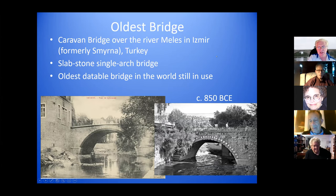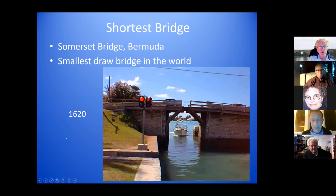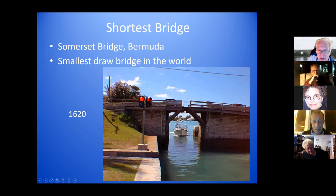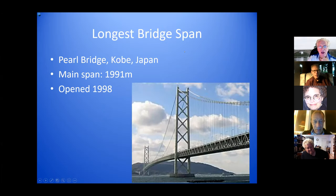This is the Somerset Bridge in Bermuda, initially built in 1620 — the smallest drawbridge in the world. This part doesn't move, nor does this. The whole drawbridge part is just a wooden plank over an opening. If a captain needs it opened, some people come along and move that plank. Originally, two tiers would rise up.